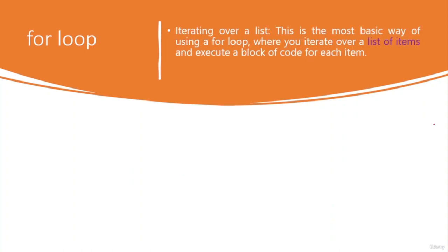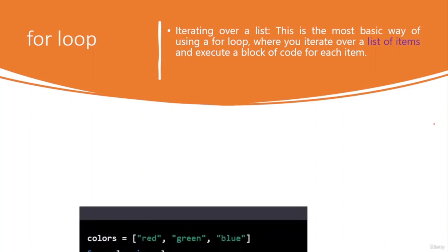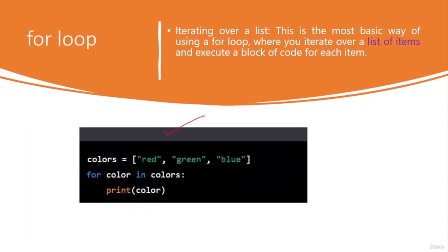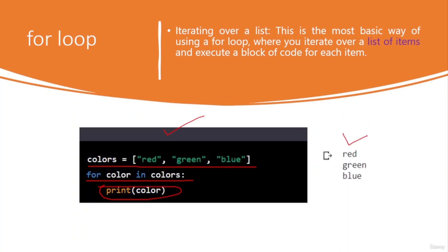You can use a for loop to iterate over a list — this is the most basic usage. For example, given a list called 'colors', the for loop iterates over the items and prints each color. Here you can see the list of colors and the for loop printing them. The output shows red, green, and blue.